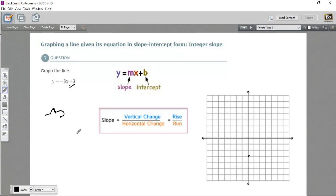But negative 3 is not a fraction. Well, luckily for us, we can write any number as a fraction by just putting it over 1. So this is negative 3 over 1. So this is our rise here. And this is our run. What rise means is how many spaces it goes up. And what run means is how many spaces it goes over to the right.